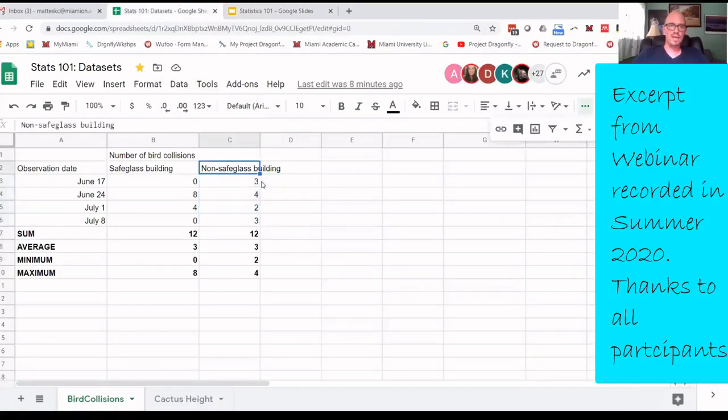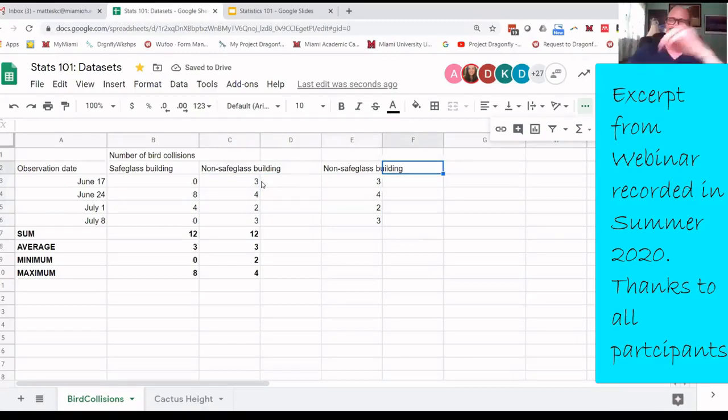Let's take a look and hopefully this will maybe make sense from a conceptual look at this. Let's just go with the non-safe glass building. So here we have each individual value. These are those X sub i values that were in that formula. The mean is 3.